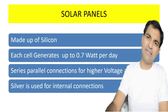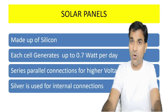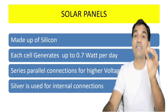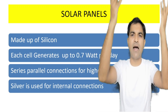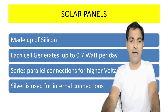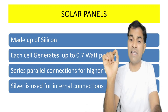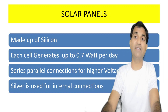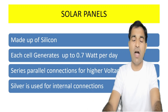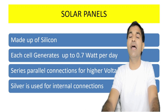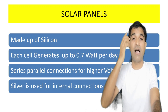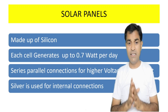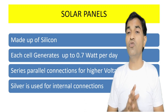Solar panels are generally made up of silicon. Silicon is extracted from silica, which is obtained from sand — abundant in India, especially in the Thar Desert of Rajasthan. Each solar cell generates up to 0.7 watts per day. For higher voltage and current, we use series and parallel connections respectively. Silver is used for internal connections within the panels.